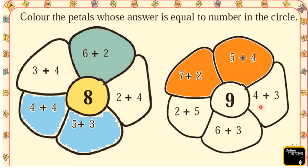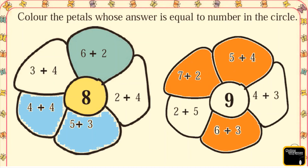Next, 4 plus 3 is equal to 9? No, 4 plus 3 is equal to 7, so we are not going to color this petal. Next, 6 plus 3 — what is 6 plus 3? Yes, 6 plus 3 is equal to 9, so we color this petal in orange. And the last petal: 2 plus 5 is equal to 9? No, 2 plus 5 is equal to 7, so we are not going to color this petal. I hope kids you understand all these additions and word problems.